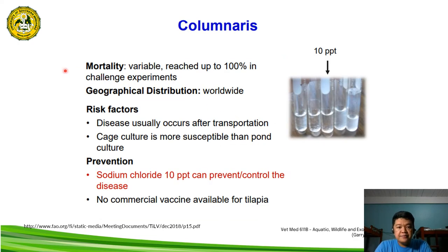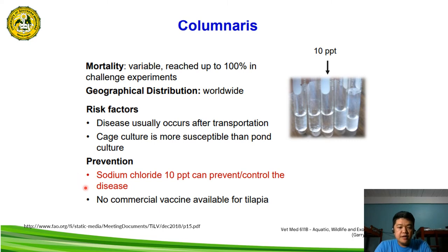For columnaris, mortality is variable and can reach up to 100% in challenge experiments. It is worldwide in distribution. Risk factors include disease outbreaks occurring after transportation of fish, and caged culture being more susceptible than pond culture. Prevention includes sodium chloride at 10 PPT (parts per thousand), which can prevent or control the disease. There is no commercial vaccine available for this bacterial disease.